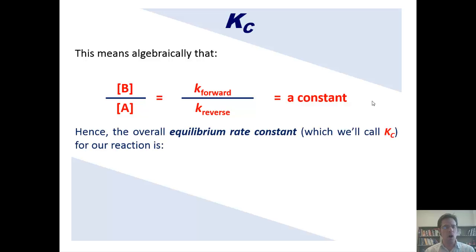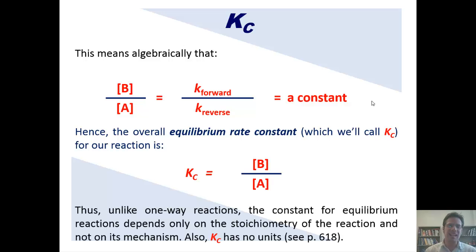Hence, the overall equilibrium rate constant, which I'll call Kc for this reaction, is equal to the concentration of B divided by the concentration of A. Thus, unlike one-way reactions, the constant for equilibrium reactions does depend only on the stoichiometry of the reaction and not on its mechanism. Also, just so you know, Kc has no units.